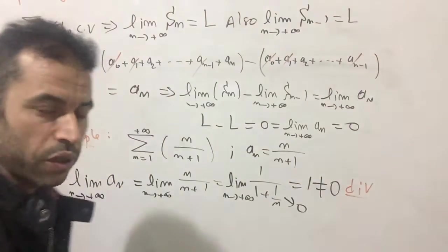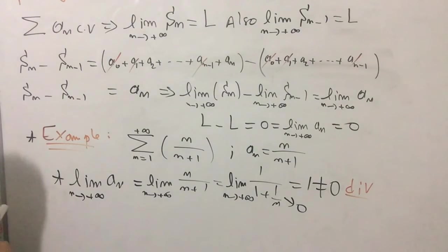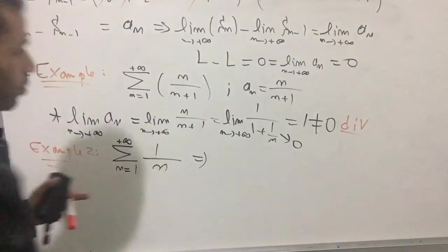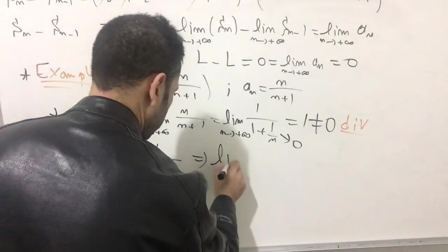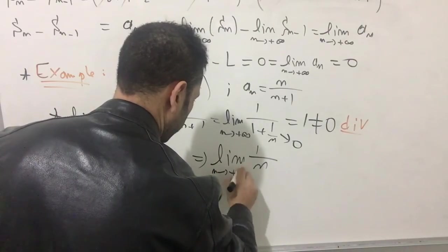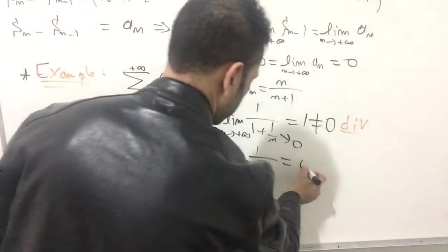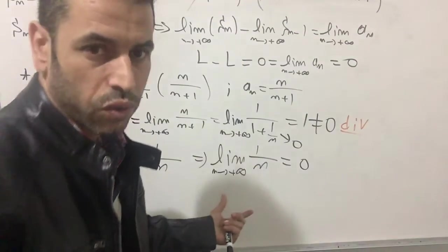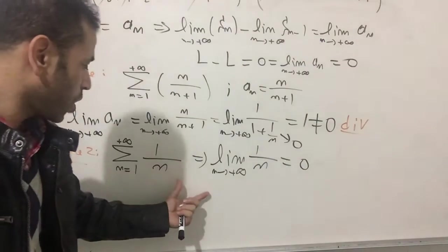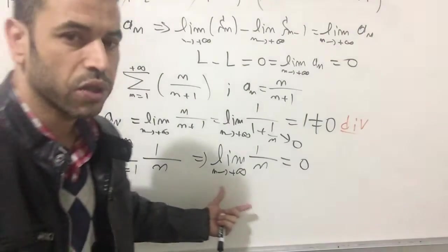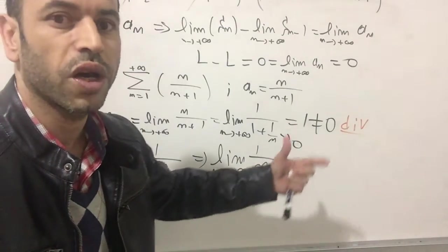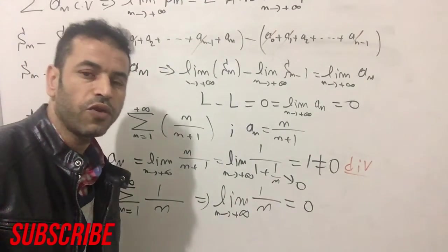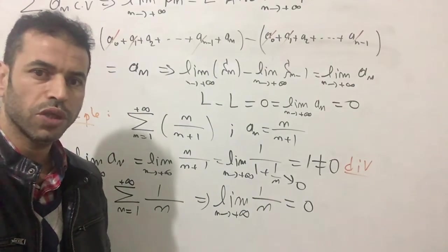For the second example, we have the series Σ 1/n. We are simply going to calculate the limit: the limit of 1/n as n goes to infinity equals zero. However, this is not convergent — this is a divergent series, because this is the harmonic series. We already proved this one is divergent, and we are going to see these examples in the next video. These series are totally different from one another. For now I'm done with this proof. We will see more examples in the next coming videos. Please subscribe, and if you have any questions just put them in the comments. Thank you for watching, see you in the next video!